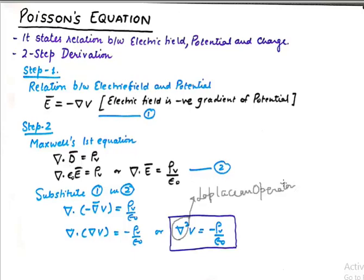We already have seen this operator when we did wave equation. In wave equations also we saw Laplacian E to be equivalent to mu not epsilon not curly square E by curly t square. So we said at that point that this is Laplacian E also.